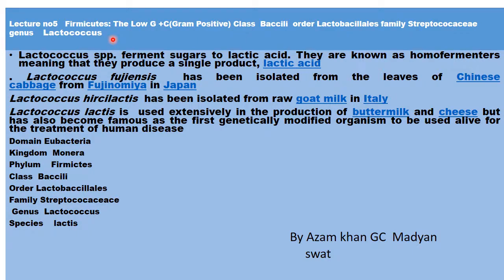Lactococcus species ferment sugar to lactic acid. They are known as homo-fermenters, meaning that they produce a single product — lactic acid. The Streptococcaceae family's Lactococcus genera are lactic acid producing bacteria because they ferment milk into lactic acid, producing a single product.